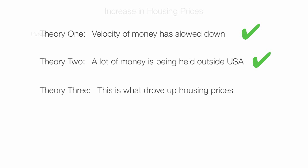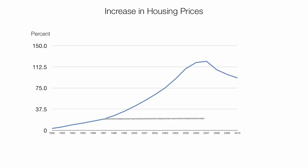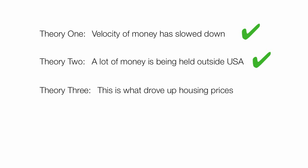Theory 3 is that this is what drove up housing prices. Housing prices since 1960 have gone up substantially. From 1997 to 2007, homes increased about 102%, and at the same time M2 increased about 100%. Over a longer 15-year period, housing went up 122% while M2 increased 126%. So it seems like all three of these theories could be correct — perhaps all of the above. Thank you.